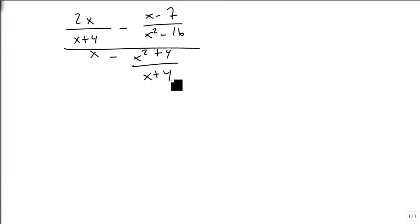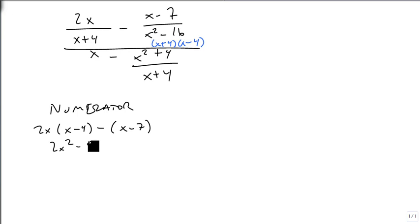So what we want to do now is start with our numerator. Our numerator has x plus 4, x minus 4 as its LCD, so we're going to get 2x times x minus 4 minus x minus 7. So this is going to give us 2x squared minus 8x minus x minus 7 over our LCD, which is 2x squared minus 9x minus 7 over our LCD.